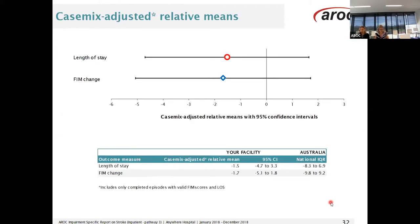Case mix adjusted relative means: this is for length of stay and FIM change for your service. Comparison of statistics such as length of stay and FIM change are only possible if the groups being compared are made up of similar patients. For example, if your facility treats all the heavy strokes and another service only treats the light strokes, we can't compare the two services for length of stay or FIM change as it's not a fair comparison. What AROC does is control for the mix of cases at each service so that the remaining differences are most likely to be due to process differences. Further information on case mix adjusted relative means is contained in the glossary in the appendices of your report.